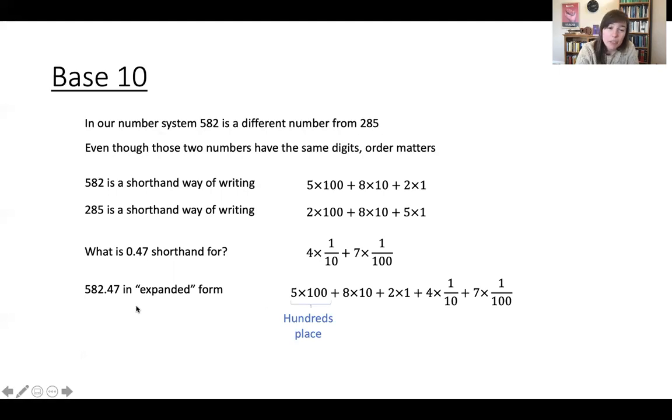Now we are talking about place values also in this chapter. And so we call 5 is in the hundreds place because it's 5 times 100. This 5 is going to be in the hundreds place. This 8, we say, is in the tens place because we're saying how many tens we're collecting. So we've got 5 hundreds, 8 tens.